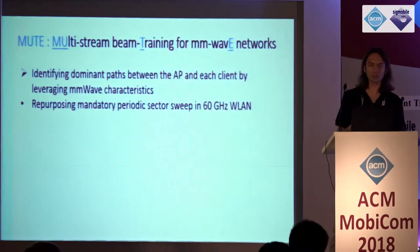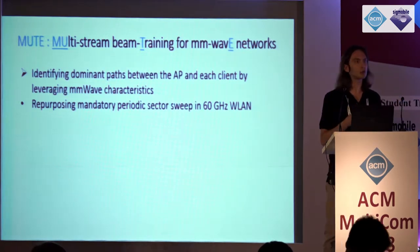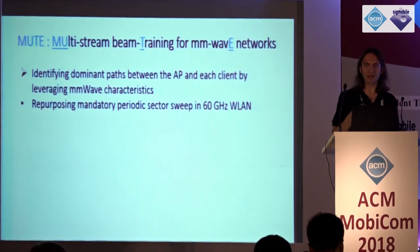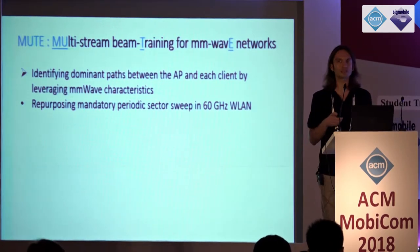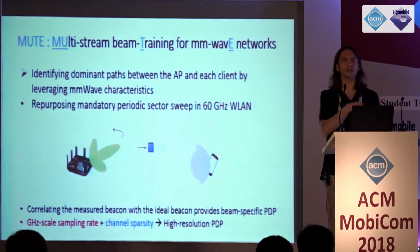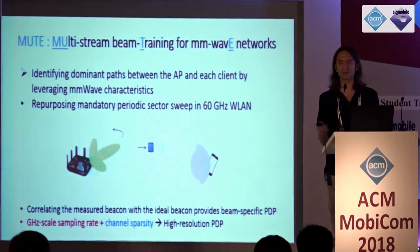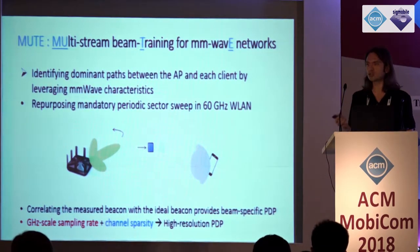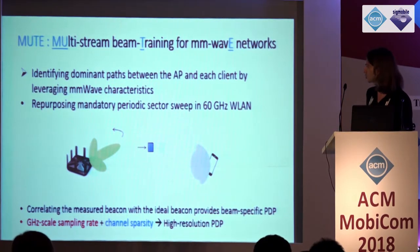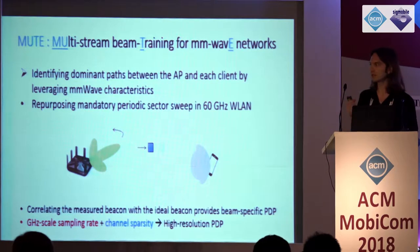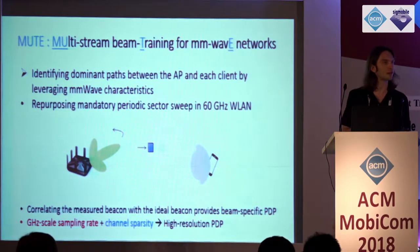In this work, we propose MUTE — multi-stream beam training for millimeter wave networks. MUTE tries to identify dominant paths between the access point and each client by leveraging millimeter wave characteristics. At a high level, we propose to repurpose the mandatory sector sweeps that happen in millimeter wave wireless LANs. The access point performs a sector sweep trying each directional beam while the other side listens in quasi-omni mode, and those sector sweep frames are known frames. By correlating the measured beam pattern with the known pattern, we can get the power delay profile for each beam. Leveraging the gigahertz sampling rate and channel sparsity, we can get power delay profiles with high resolution.